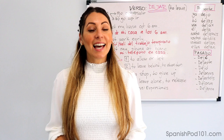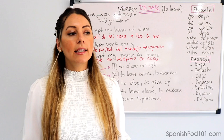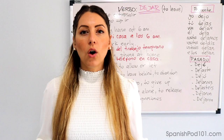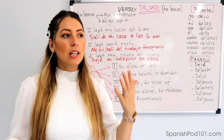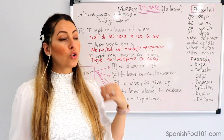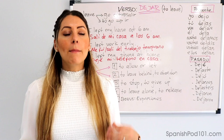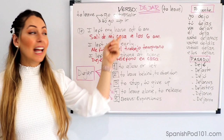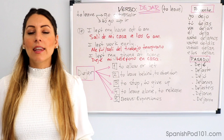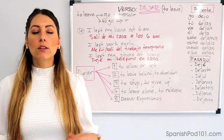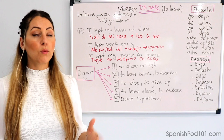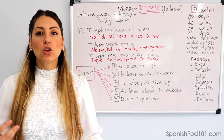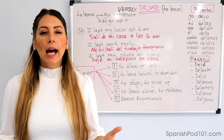Muy bien, empecemos con la clase. El verbo dejar en español por lo general significa 'to leave' — podemos traducirlo al inglés como 'to leave'. Pero no es siempre correcto. Cuando queremos decir 'to go out' or 'to go', en ese sentido no vamos a usar el verbo dejar; vamos a usar otros verbos, por ejemplo el verbo salir y el verbo ir. So most of the time dejar means 'to leave', but it's not always the case. For 'to go out' we use salir, and for 'to go' we use ir.